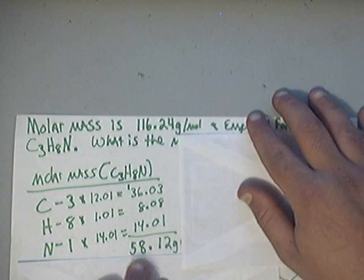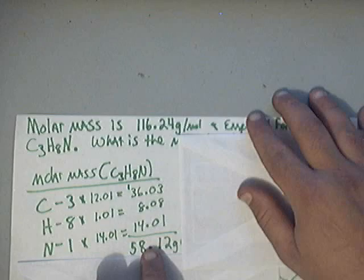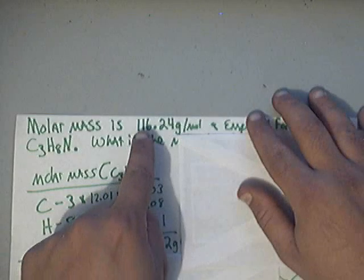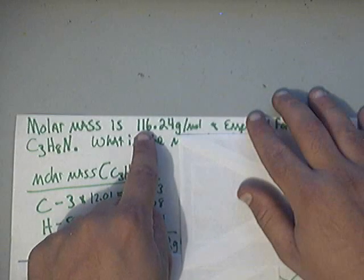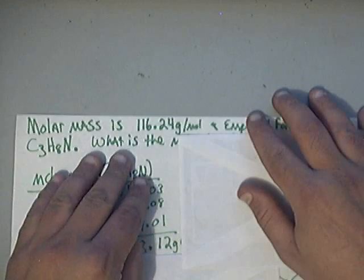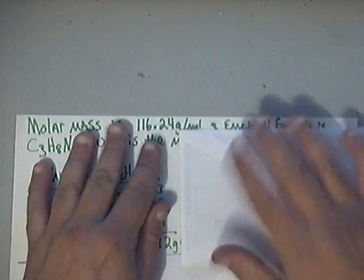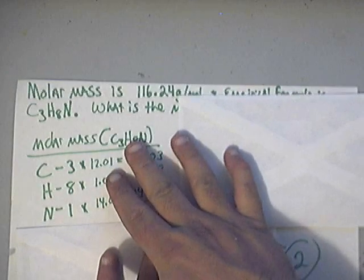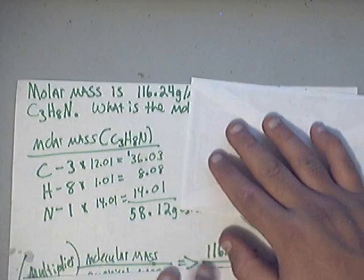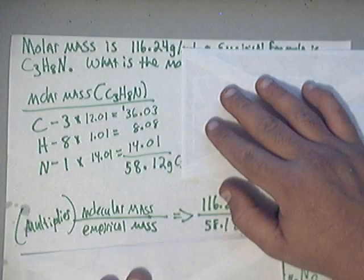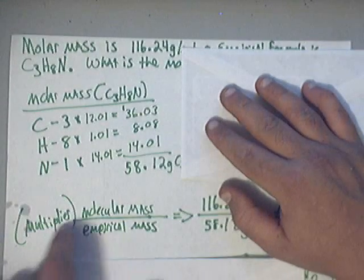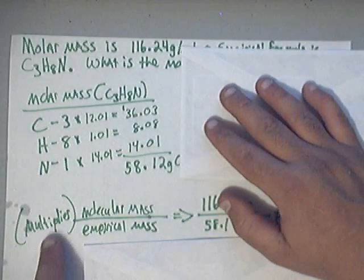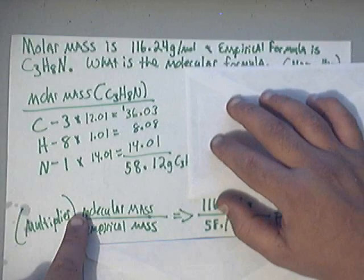Now, what I'm going to do next with this 58.12 is I'm going to take it and divide it into the 116.24. The reason for that is I'm looking for a multiplier, basically a multiple. And when I do that, this is what I'm doing. I'm taking, I'm looking for a multiplier and I find that multiplier by taking the molecular mass,